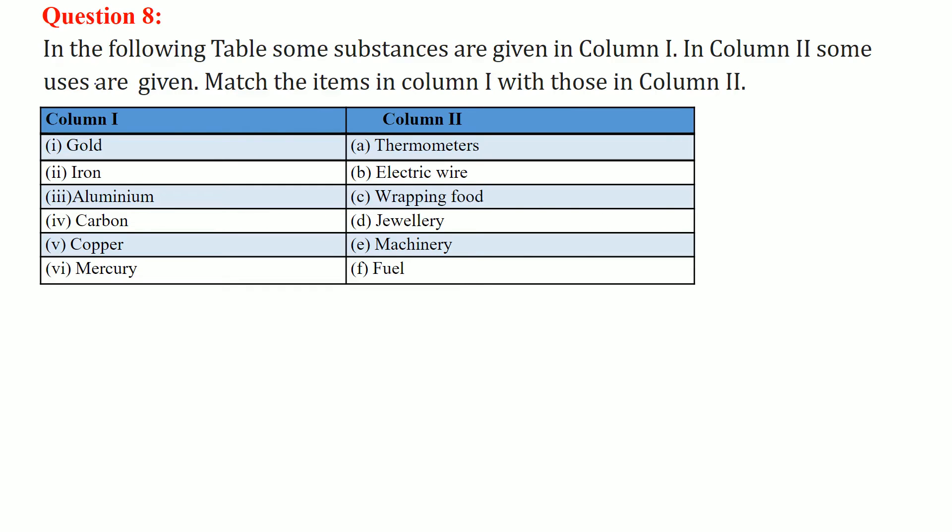Match the items or substances with their uses. Gold for jewelry, iron for machinery, aluminum for wrapping food, carbon for fuel, copper for electrical wires, mercury for thermometers. This is the correct matchup.